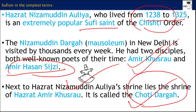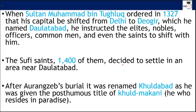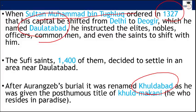Amir Hassan Siji is in news because of an interesting book he wrote. Going back to the era of 1327, Sultan Muhammad bin Tughlaq ordered the migration of the capital from Delhi to Deogir. Later it was renamed Daultabad, and then Khuldabad. Khuldabad was named after Aurangzeb's burial there — he was given the title 'Khuld Makhani,' meaning a person who resides in paradise.